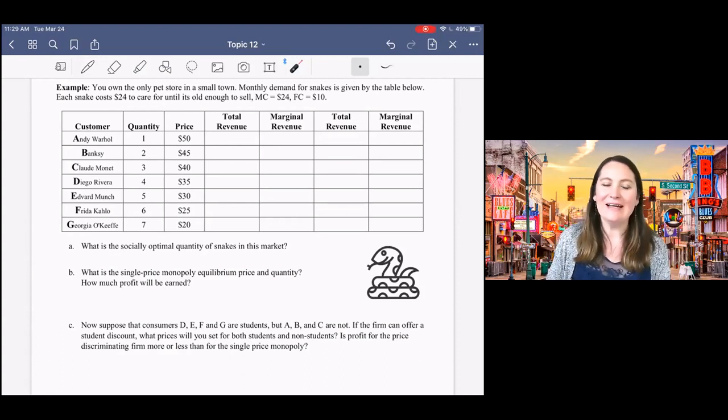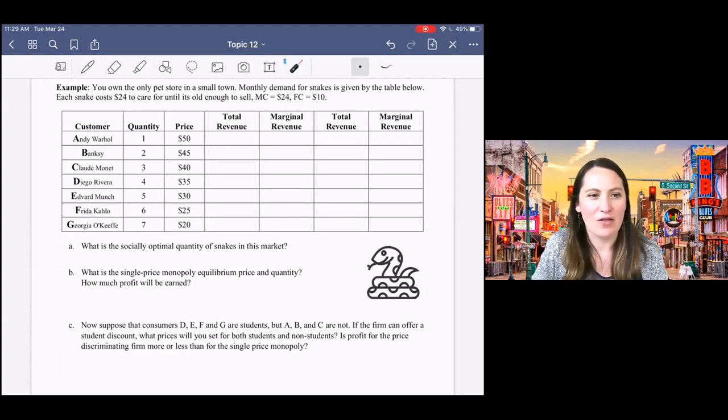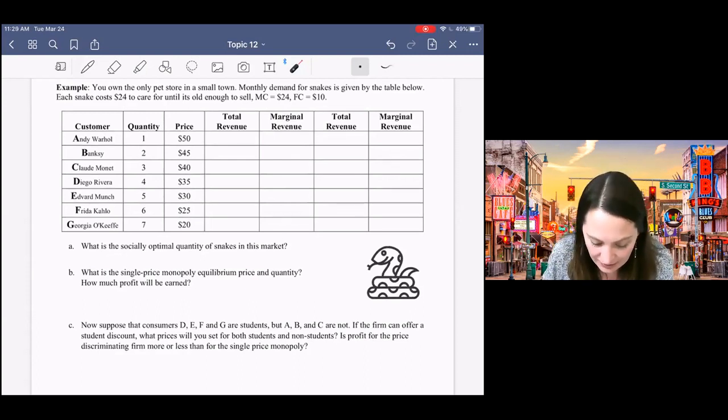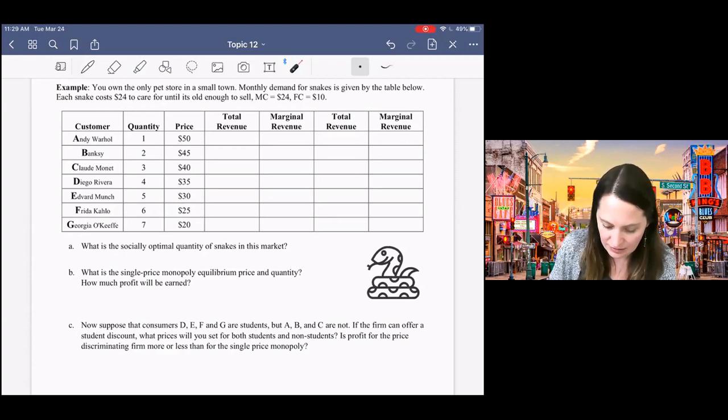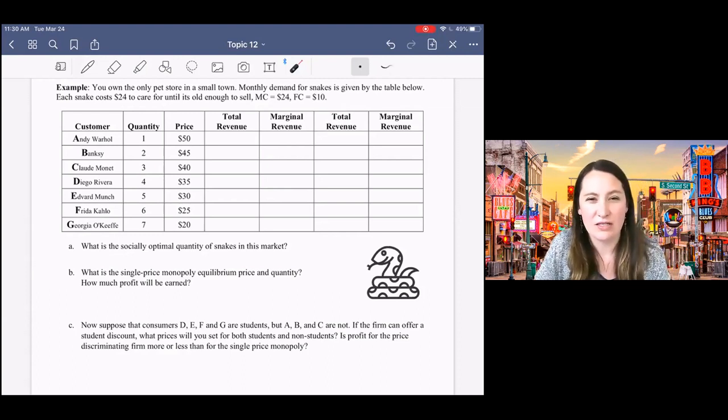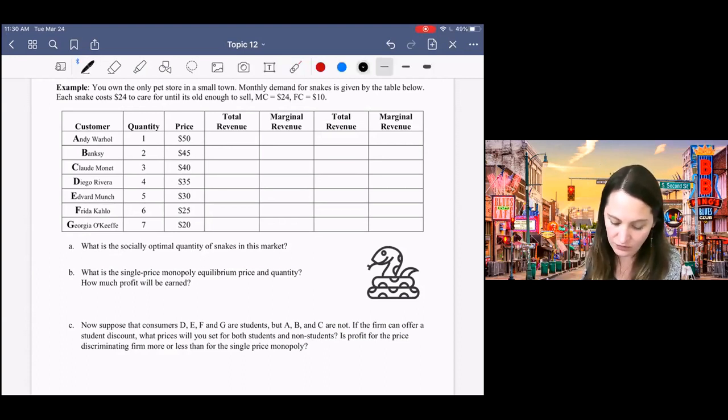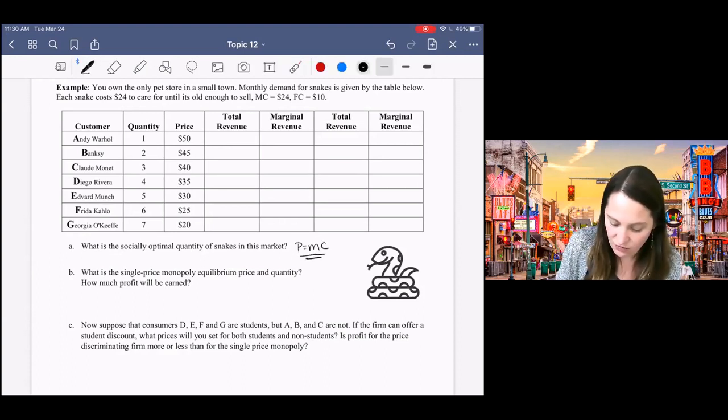All right. So in this last video, we're going through the example for price discrimination. Hopefully you've worked through this on your own. Maybe you have questions. We're gonna do it here together. I also posted the answers on Brightspace in case you want to check your answers there. So here we have the same type of problem that we looked at in the last video, a table problem. We've got a lot of different people here. Each person is only interested in buying one unit of the product. And we've got information about the costs of production. And what we want to do is answer some questions about what's going to happen if this market is competitive. In other words, what's the socially optimal outcome? What happens if this market is a single price monopoly? And what happens if we have price discrimination?